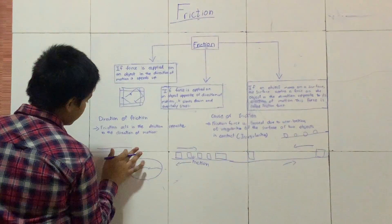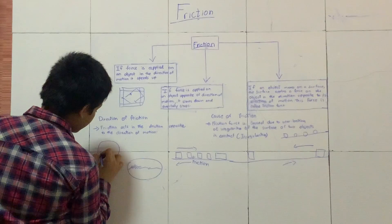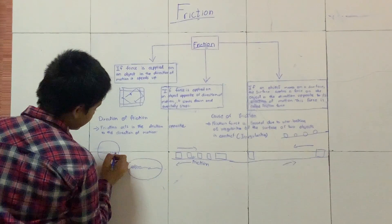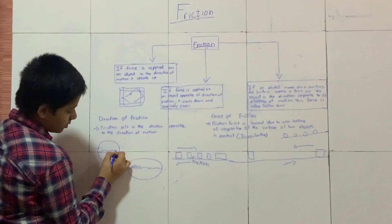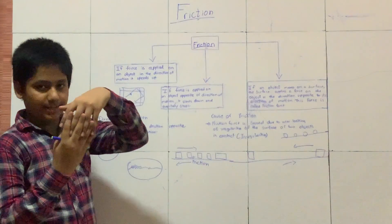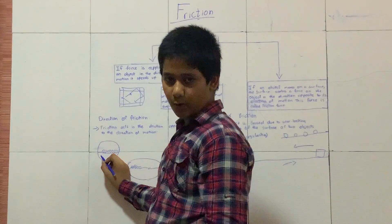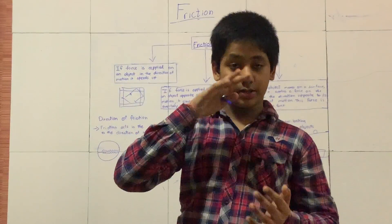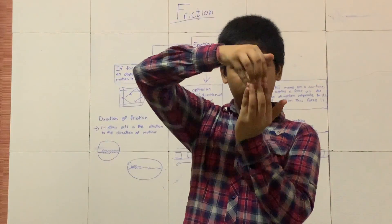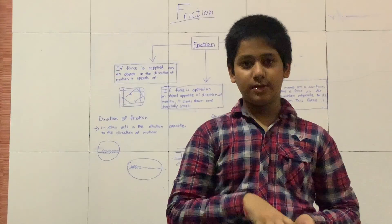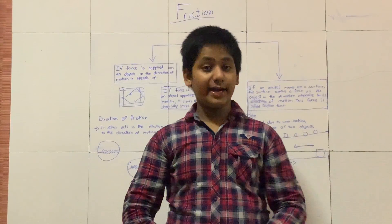When you spray powder on the carrom board, the powder fills in those tiny holes on both the coin and the board surface. Now when you hit the coin with the striker, it moves much faster and travels a much greater distance — because the holes are filled, there is much less interlocking of irregularities and therefore less friction.